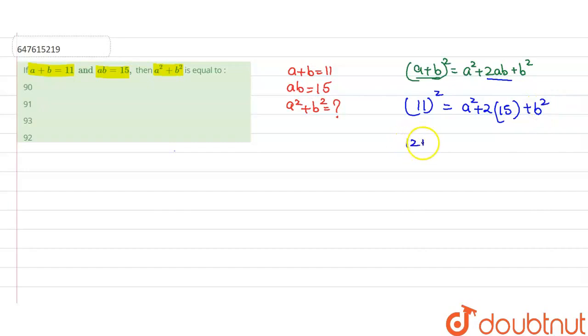So, 11 square is 121, equals A square plus, 2 times 15 is 30, plus B square. So 121 minus 30 equals A square plus B square. 121 minus 30 is 91, which equals A square plus B square.